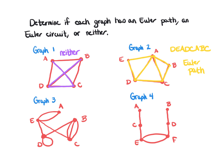Looking at graph number three, starting at vertex A: travel to E, then to D, take the loop around D, then go to B, then to C. Rather than going to E now, take the two edges between B and C — go C to B, then B to C, then to E, and finally end at A. Since I began and ended at vertex A, this is an Euler circuit.